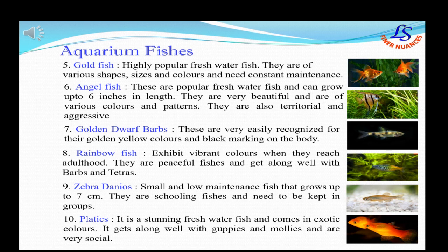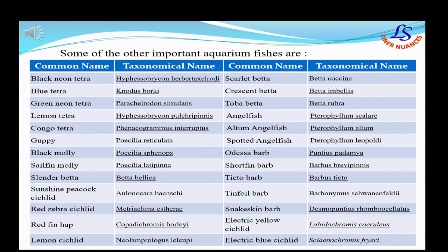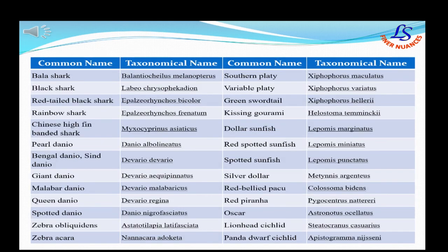Other popular aquarium fishes include goldfish, angelfish, golden dwarf barbs, rainbow fish, zebra danios, and platys. Here is a list of some important aquarium fishes along with their common and taxonomical names which you can use in your aquarium. Other fishes that can be used include pearl danio, marabar danio, queen danio, and spotted danio — these are various types of danios commonly used in an aquarium.